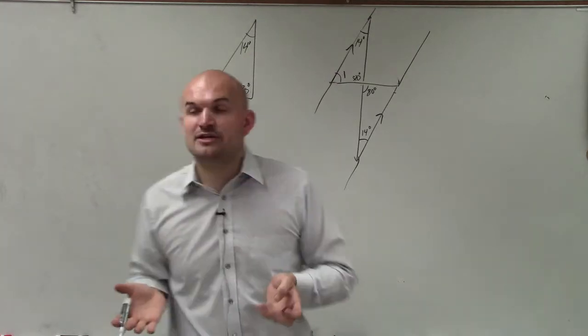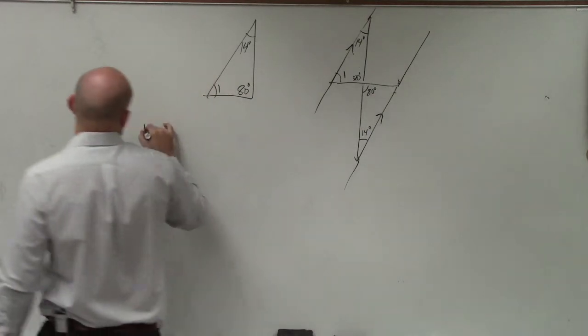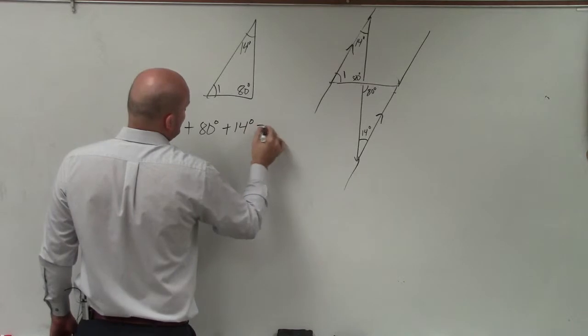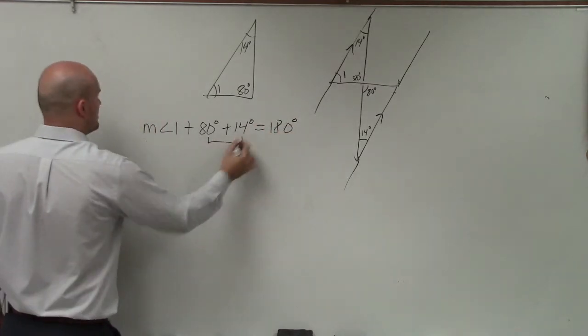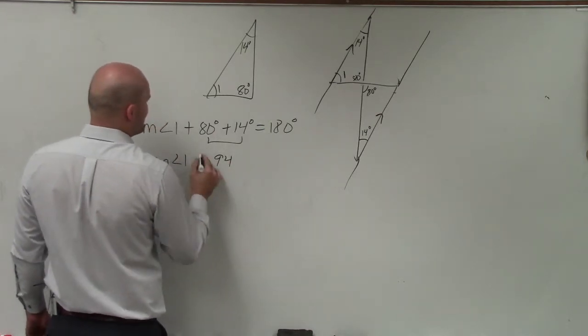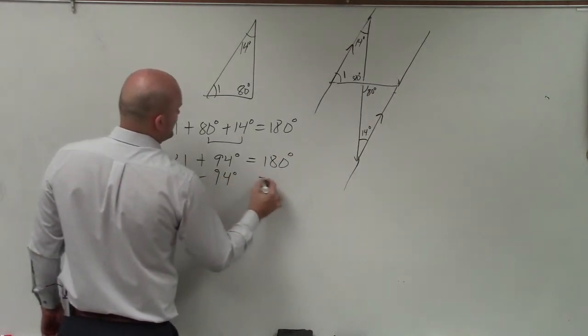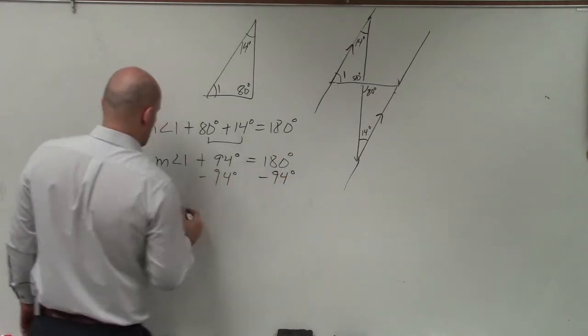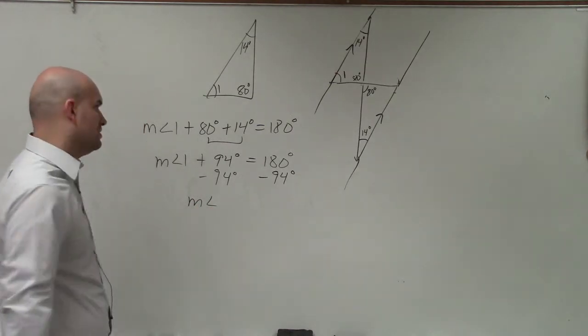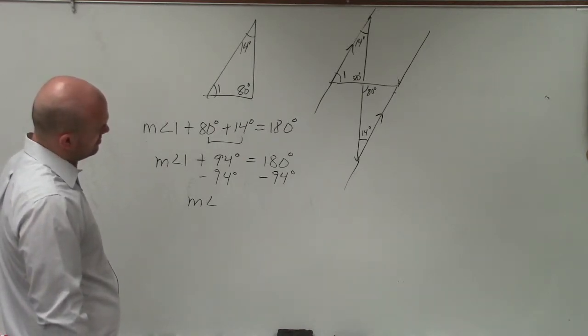Now, all I simply need to do is use the triangle sum theorem to be able to find my missing measure. So I'll create a formula: measure of angle 1 plus 80 degrees plus 14 degrees equals 180 degrees. Combine these. Measure of angle 1 plus 94 degrees equals 180 degrees. Subtract 94 degrees. Measure of angle 1 is going to equal 86.